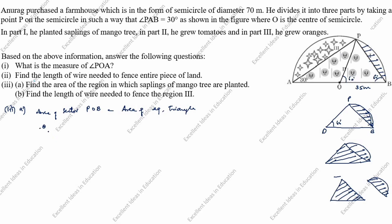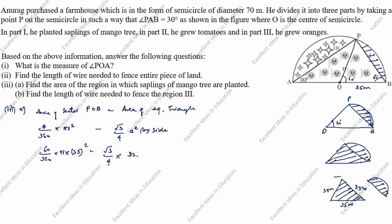Area of sector POB formula is (θ/360) × π·R². Area of equilateral triangle formula is (√3/4) × a². Here all sides equal 35 meters. So: (60/360) × π × 35² minus (√3/4) × 35². Simplifying: (1/6)π × 35² minus (√3/4) × 35². Taking 35² as common: 35² × (π/6 minus √3/4). Taking LCM of 6 and 4 gives 12: 35² × (2π minus 3√3) / 12.